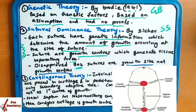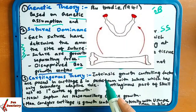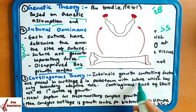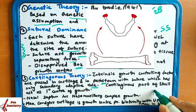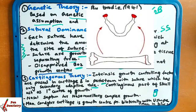The third theory is the cartilaginous theory. Intrinsic growth means the growth which is taking place naturally. Natural growth controlling factors are present in cartilage — the natural growth takes place with the help of cartilage. The periosteum with suture has only a secondary adaptive role. They are attached with the suture but do not have an intrinsic growth factor.